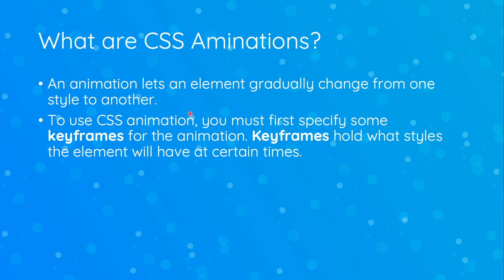So let's go ahead and get started. Let's begin by learning what CSS animations are. Simply put, an animation lets you change from one style to another. Now to use CSS animations, you must first specify what we call keyframes for the animation. Keyframes are what's going to hold the styles or the properties that you want to change for that certain element.